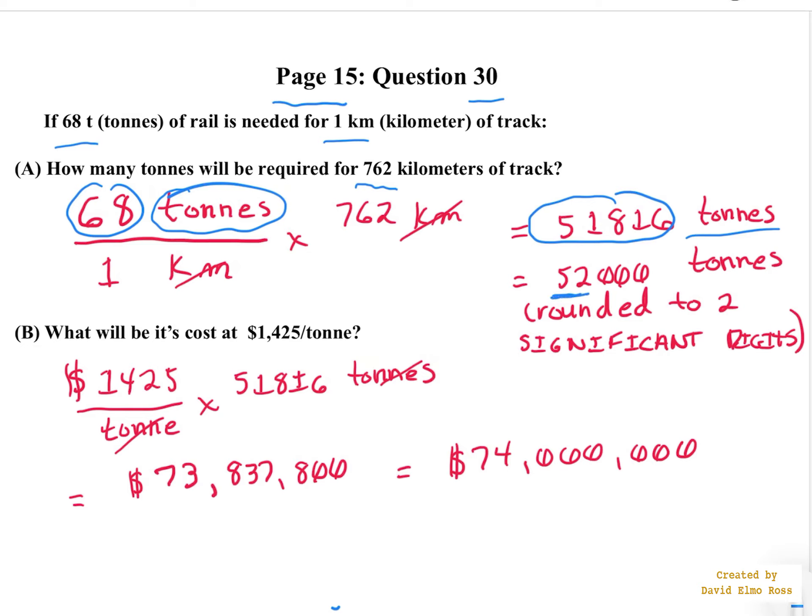It then says, what will be its cost at $1,425 per ton? And so if you take $1,425 per ton times the number of tons we worked out here, and let's use the full resolution of this number here and work that out, and we get this answer here.